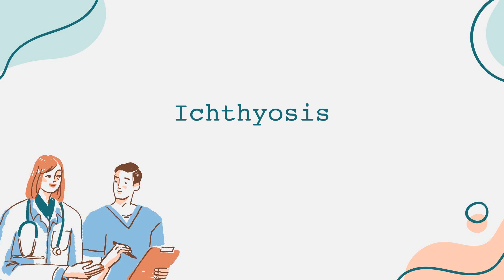Ichthyosis refers to a condition where the skin becomes thickened and results in the formation of scales. The name ichthyosis comes from the Greek word ichthys, meaning fish, which reflects the fish-like appearance of the affected skin. There are numerous types of ichthyosis, but we will focus on the most common ones.